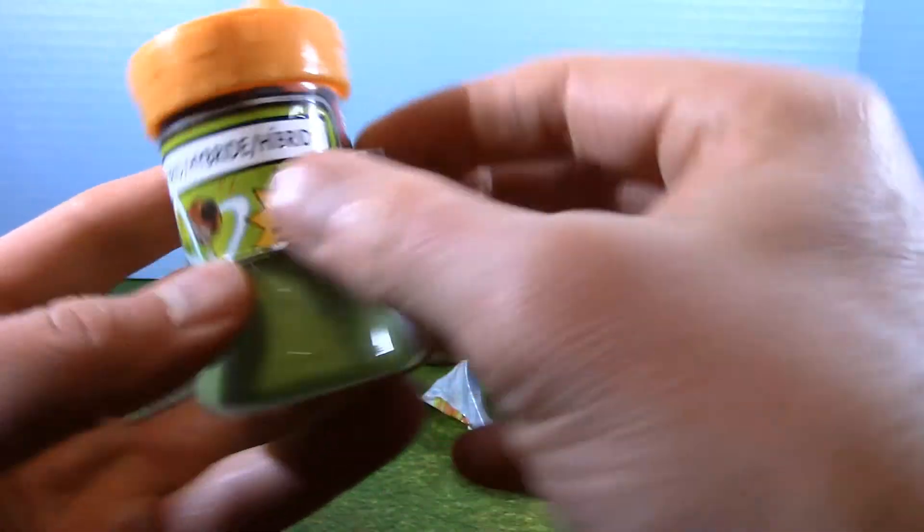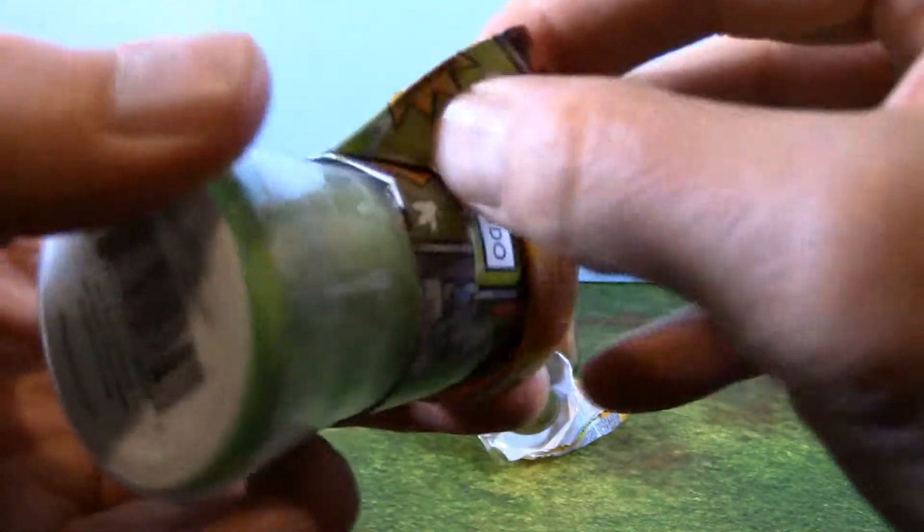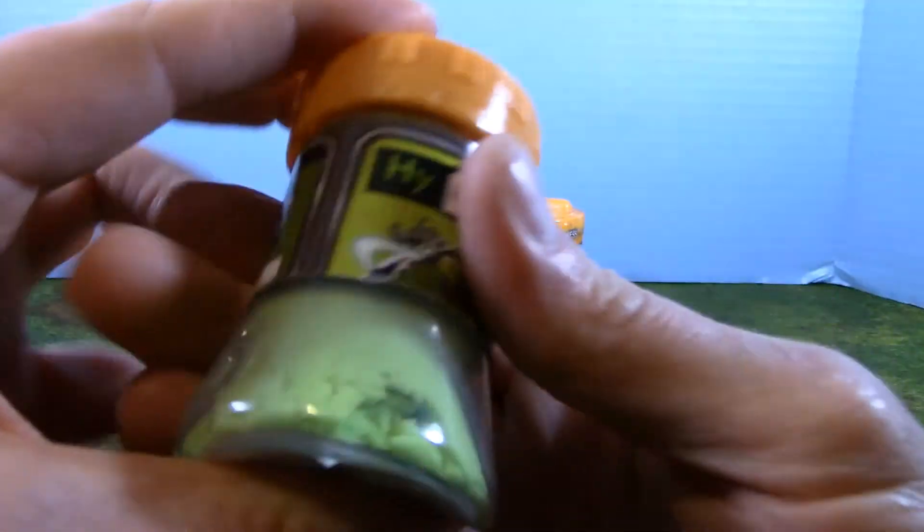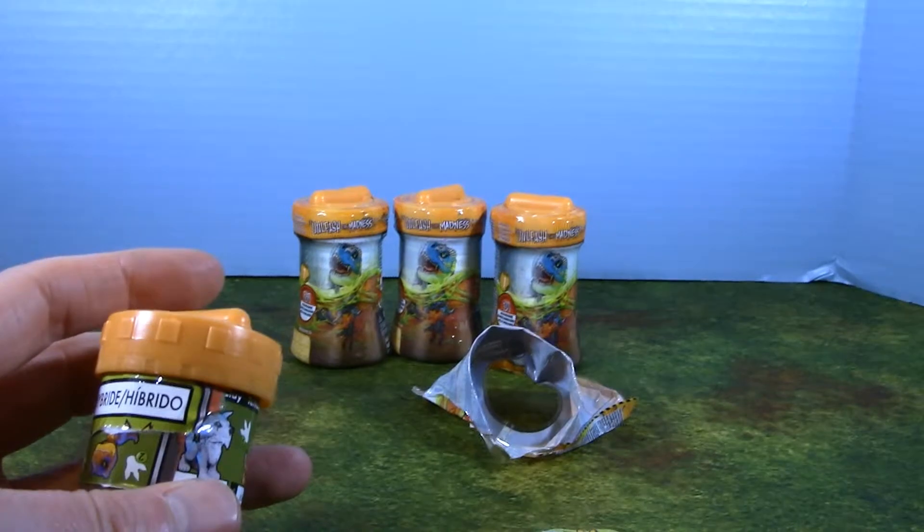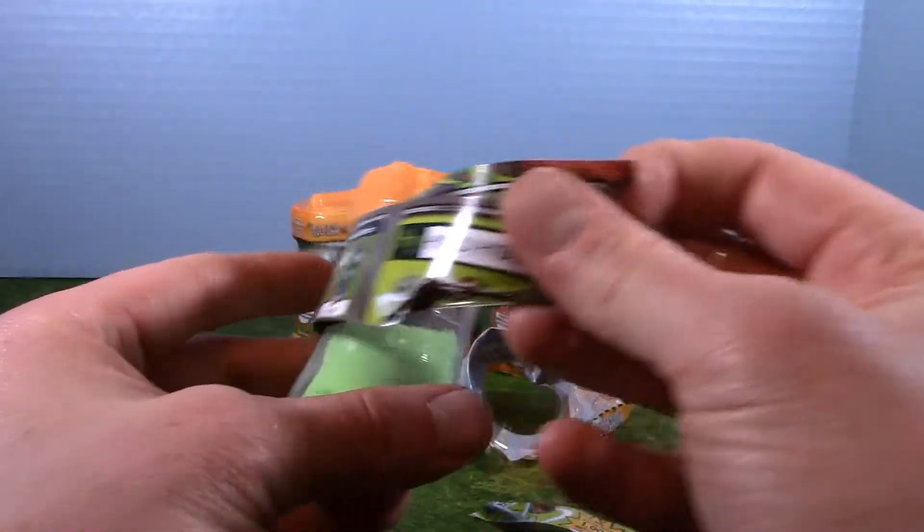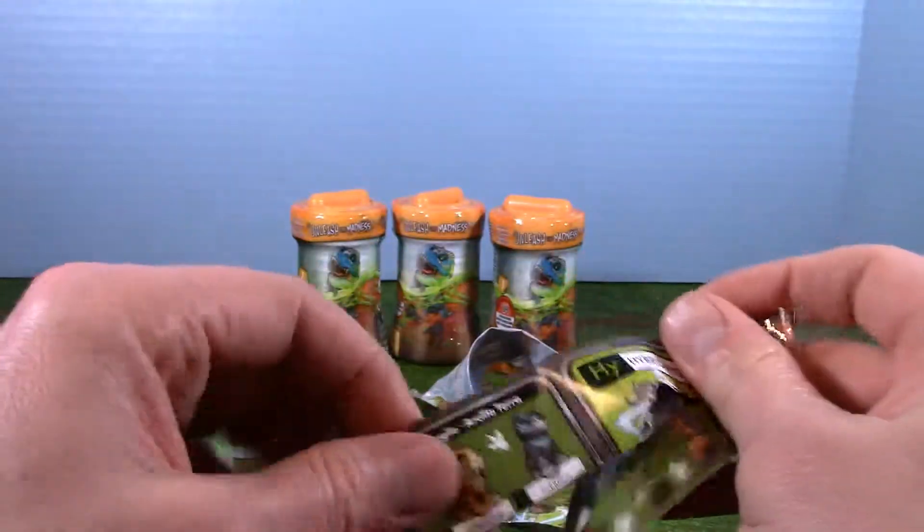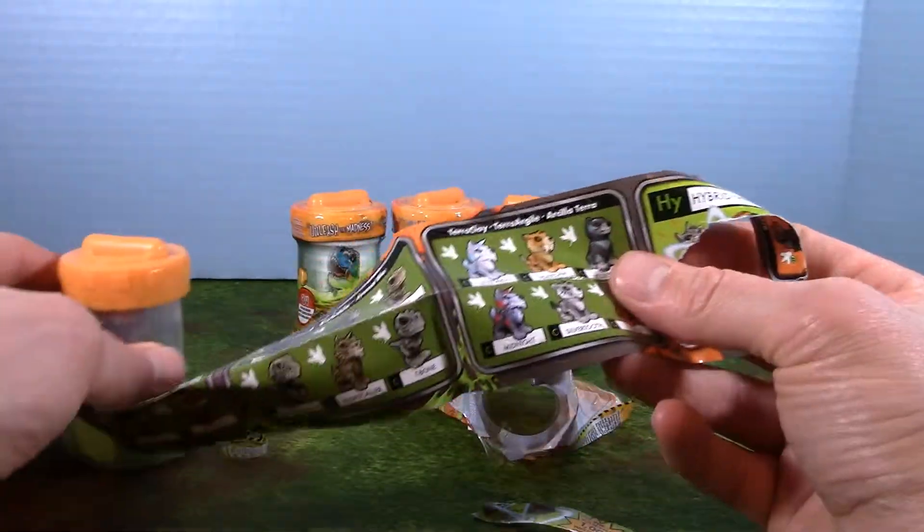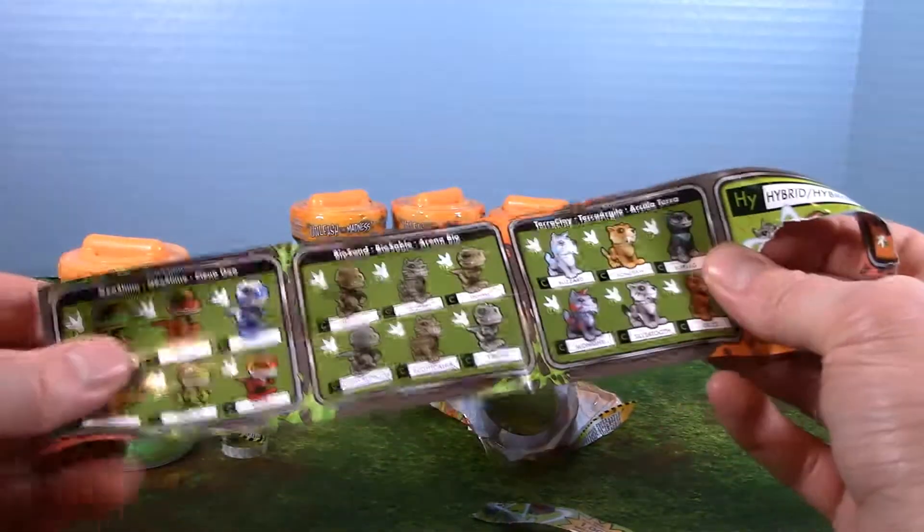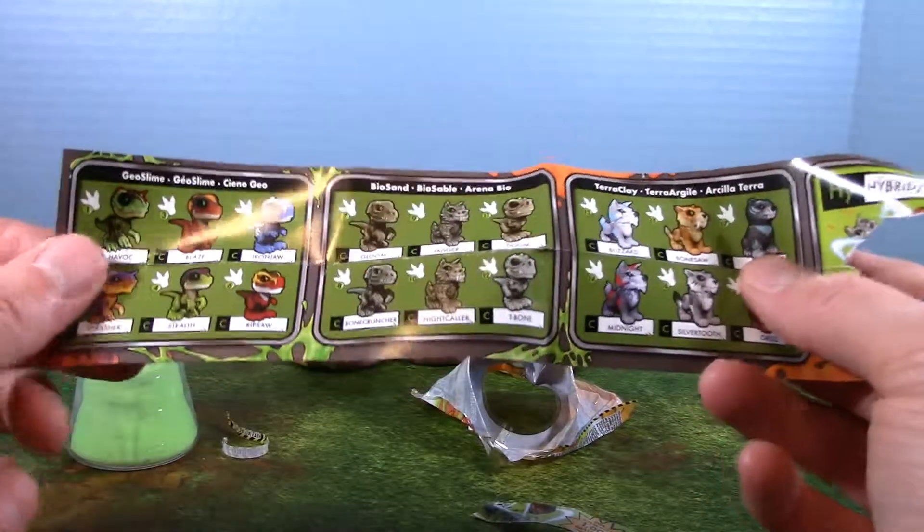It's like a little book of some sort. See if I can get this off without tearing it. Looks like it's taped on pretty good. We'll take our time, try to get this off. There we go, we finally got it loosened up. We do have a little book of sorts.